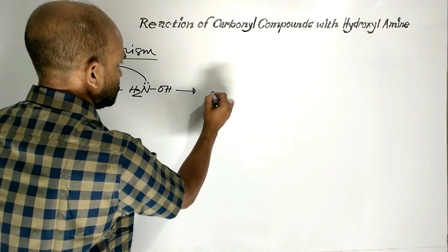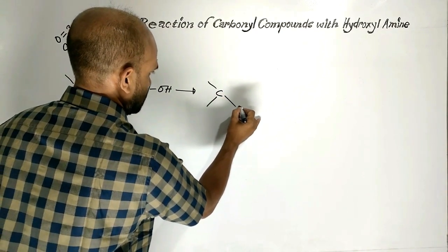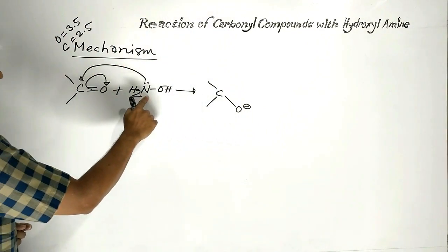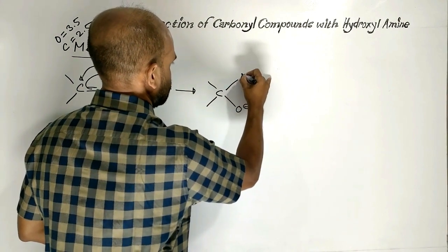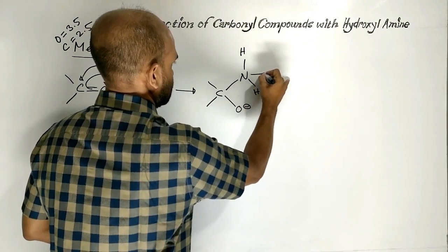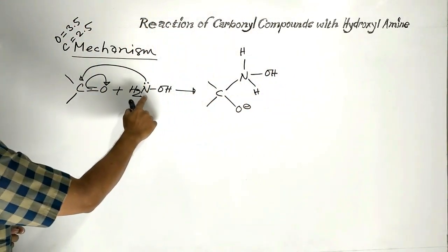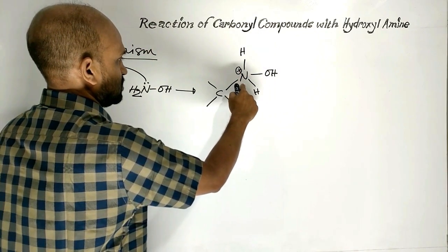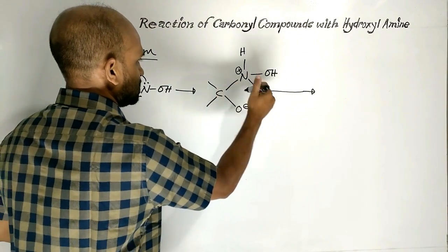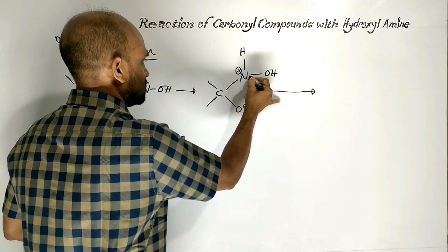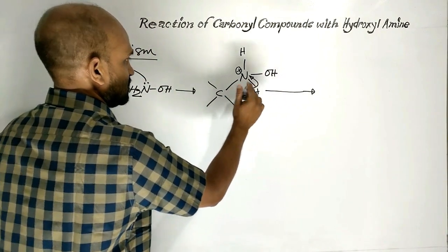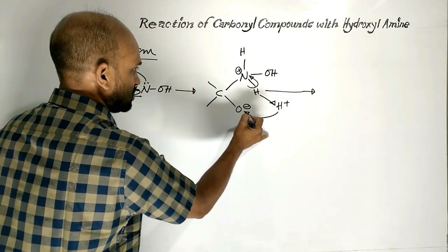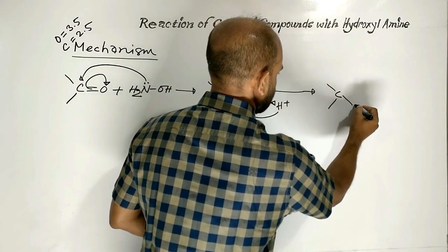Then, this nitrogen forms a bond to the carbon. As a result, this intermediate entity is obtained, with oxygen negatively charged. The nitrogen forms a bond with the carbon, and nitrogen acts as an electron pair donor. That is why over nitrogen, a positive charge is developed. Because of this positive charge, this bond pair of electrons turns into a lone pair, and this hydrogen gets free as a proton. This proton combines with the oxygen. Now, this intermediate is formed with OH, nitrogen, OH, and hydrogen.